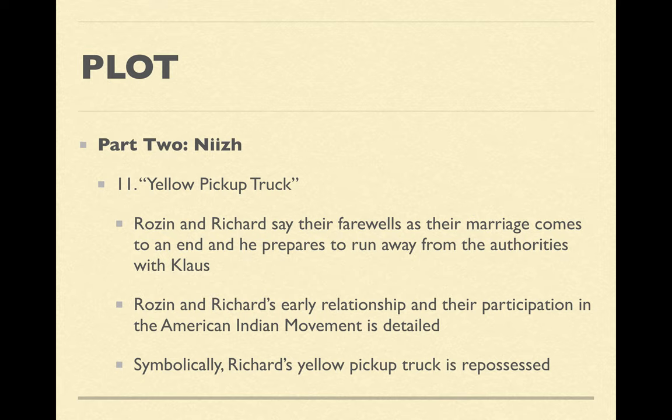In chapter 11, 'Yellow Pickup Truck,' we rejoin Rosen and Richard's marriage. They say their farewells in a tense conversation — Richard knows she's in love with Frank. Richard meanwhile has to flee because he is under investigation for illegal dumping along with Klaus, so they are going to run from the authorities by going undercover, posing essentially as people without a home who live on the street.